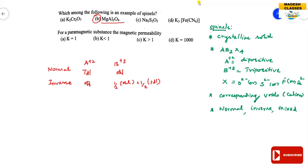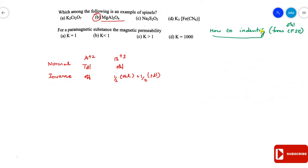A little more difficult question: how to identify which one is the normal spinel, which one is the inverse spinel, and which is the mixed spinel? Let us see some examples on how to identify whether a given spinel is normal, inverse, or mixed.